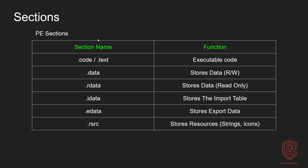The sections are sorted out into various subsections. The code or .text section contains executable code — so if you see that section, you know this portable executable has executable code. Next, the .data section stores data that can be read and written to, so it has read and write permissions. You then have the .rdata section, which contains data that can only be read from — you cannot write to it or execute it. You then have the .idata, which stores the import table — very important information. And then you have the .edata, which stores the export data.